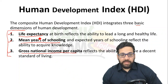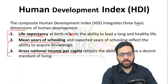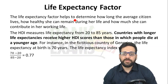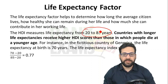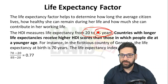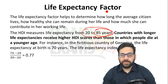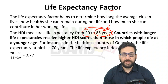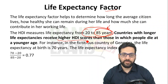The first dimension is life expectancy at birth. The life expectancy factor helps determine how long the average citizen will live. The HDI measures life expectancy on a scale from 20 to 85 years — 85 years is the ideal life expectancy according to HDI. Countries with longer life expectancy receive a higher HDI score.